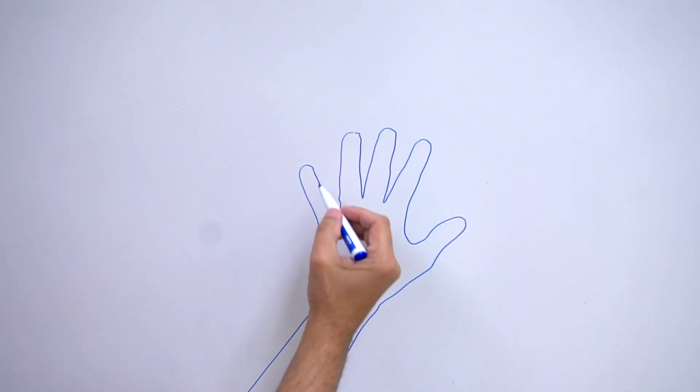Once we finish, we're going to divide each finger into three equal parts, each part getting progressively bigger.